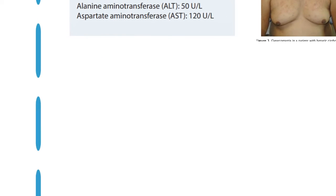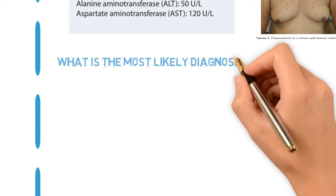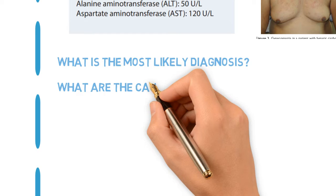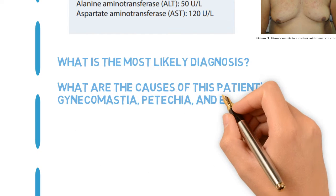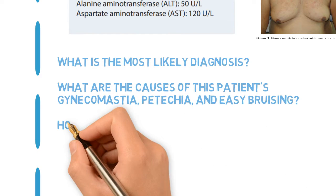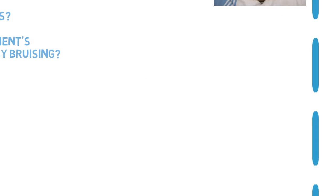What is the most likely diagnosis? What are the causes of this patient's gynecomastia, petechiae, and easy bruising? How does ascites form?